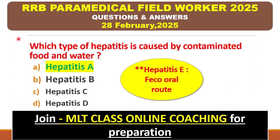At first, we will see the first question: which type of hepatitis is caused by contaminated food and water? The right answer is hepatitis A. Hepatitis B, on the other hand, is transmitted through blood, not contaminated food and water.